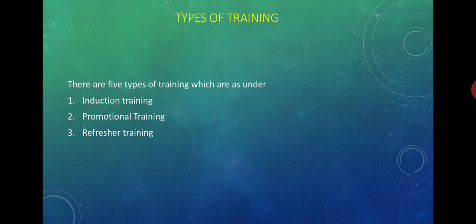The next type is job training. Job training is generally given to newly recruited employees. Instructions are given by the supervisor to new workers so that they can work smoothly in the new environment. This training is somewhat similar to induction training.